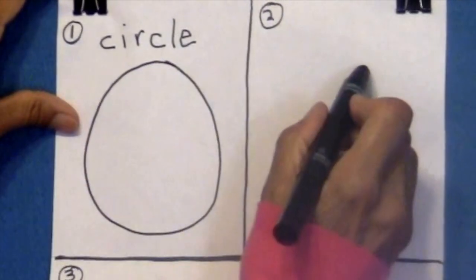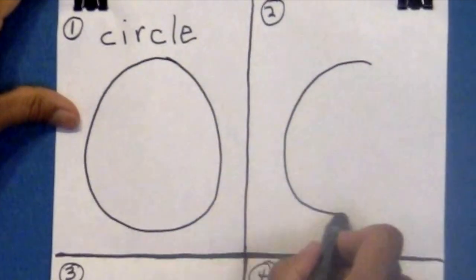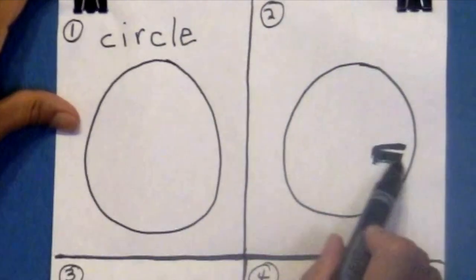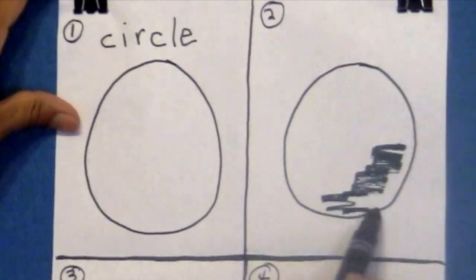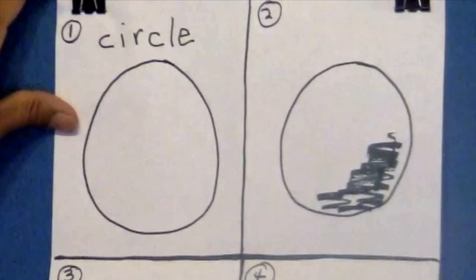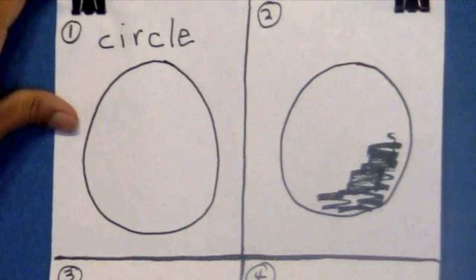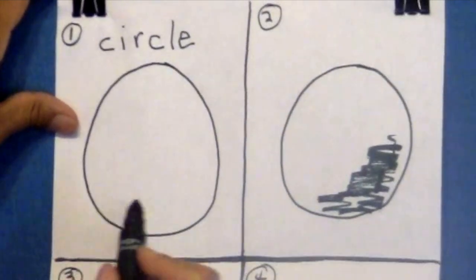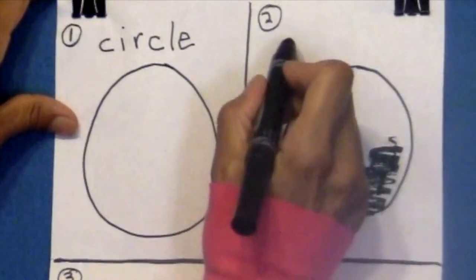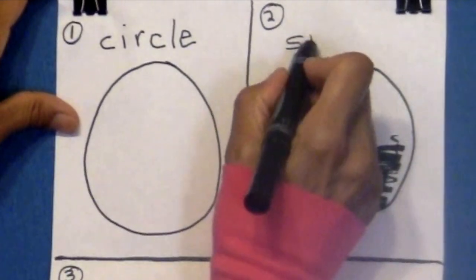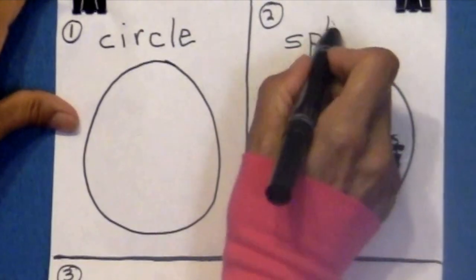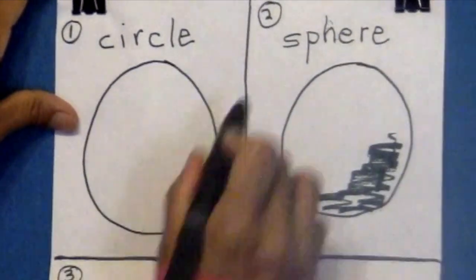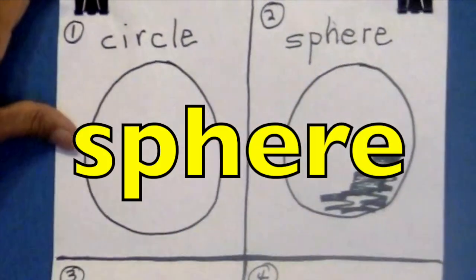Now go to box two. I want you to draw another circle. And in this circle, I want you to shade it right down here. We're going to give this circle some body. And so what do we have now? We have a sphere. Boys and girls, as you write it, I want you to say it with me. Here we go. S-P-H-E-R-E. And what is this shape? Sphere. Good job.